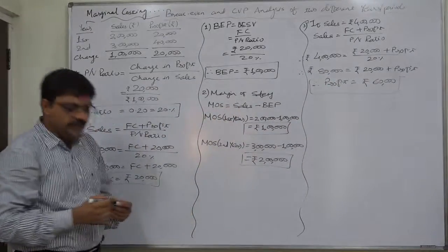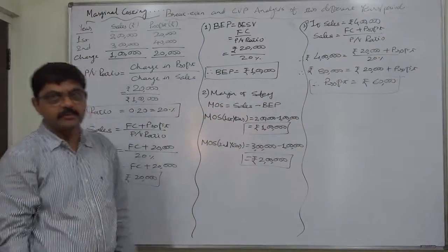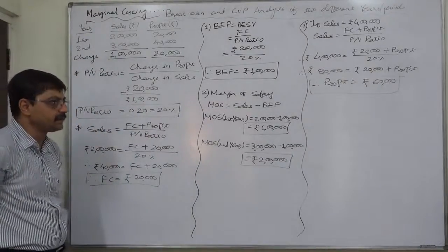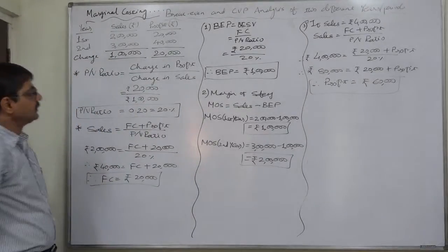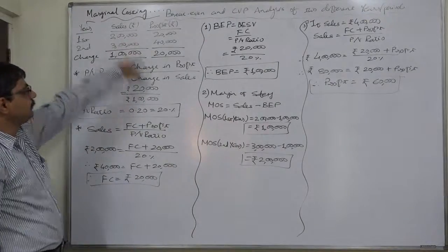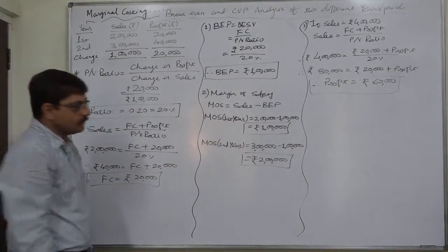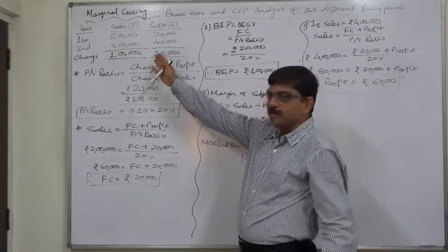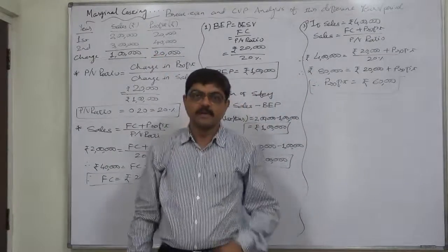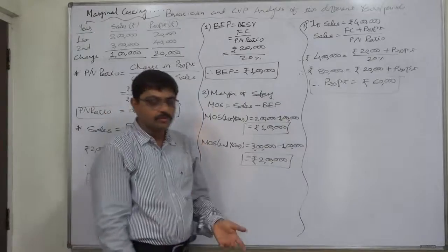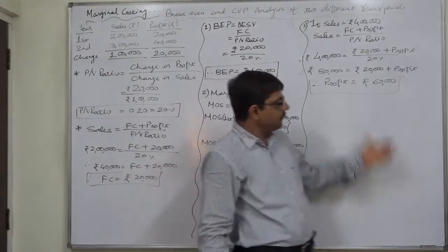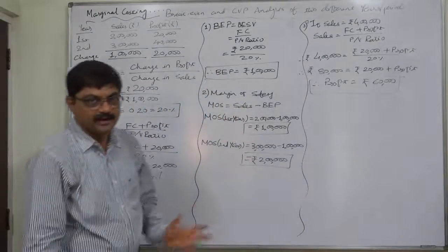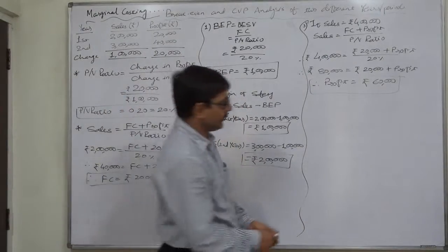Because of the assumption of no change in selling price, variable cost, and hence contribution, PV ratio, and fixed cost, there is a straight-line relationship between sales and profit. So we can predict profit without detailed working. However, in an examination, you can get marks only if you show the working on paper.